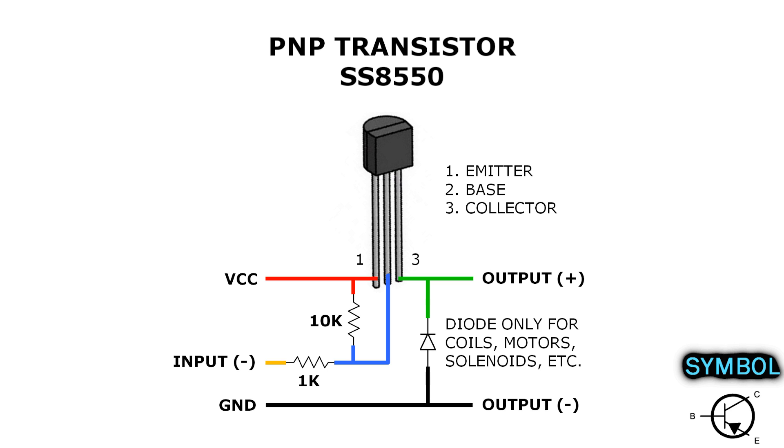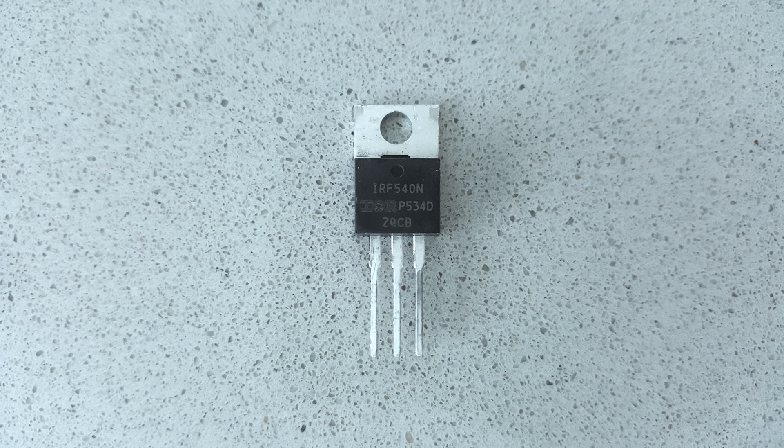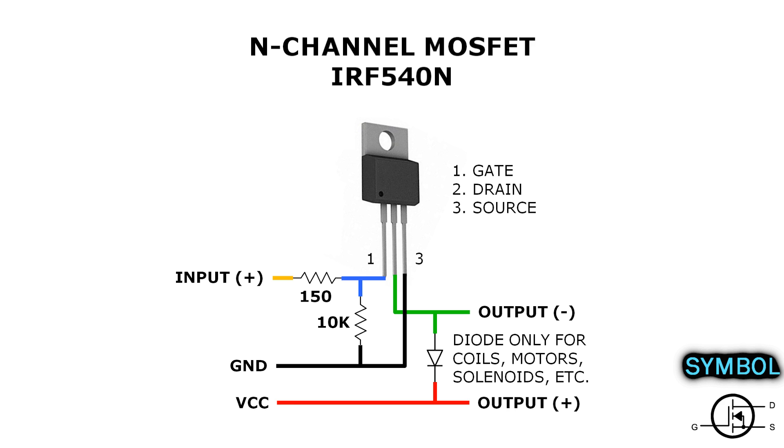But if you want to control the positive side, you have to use a PNP transistor, with the difference that it's going to turn on when the base is low and turn off when the base is high. Typical transistors like this can handle around 500mA, but for higher currents you can use a MOSFET that connects the same way, but the pins are named differently.